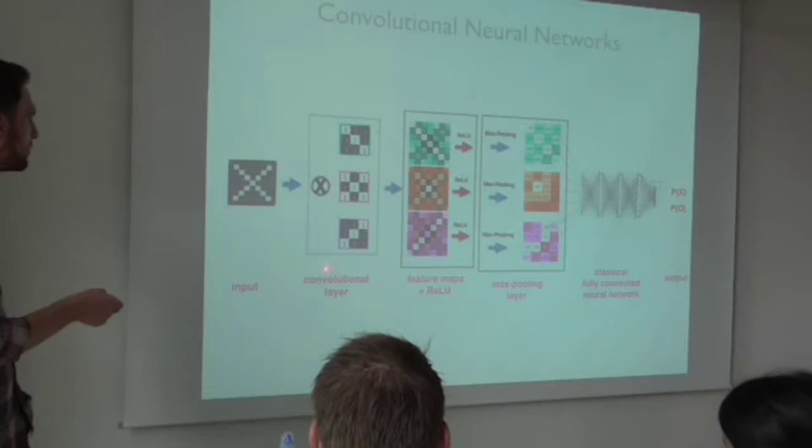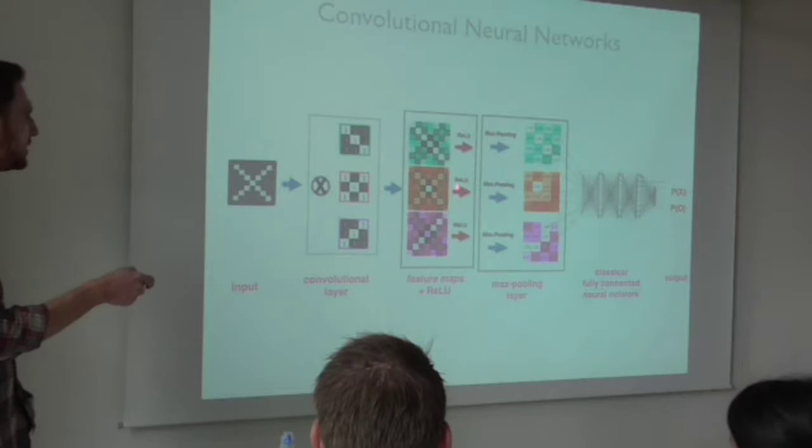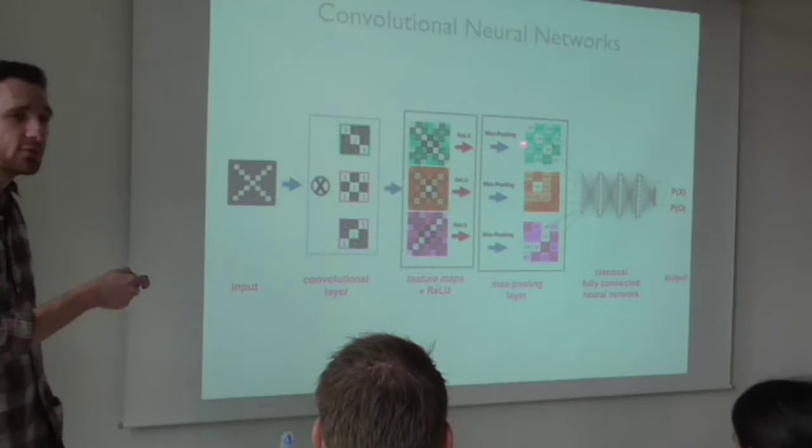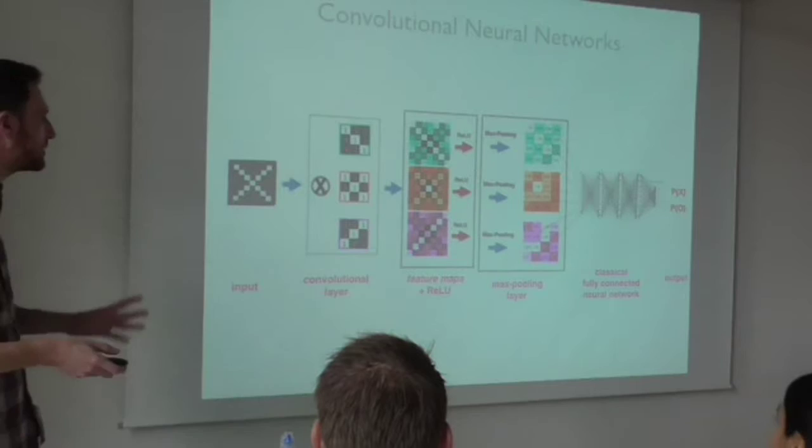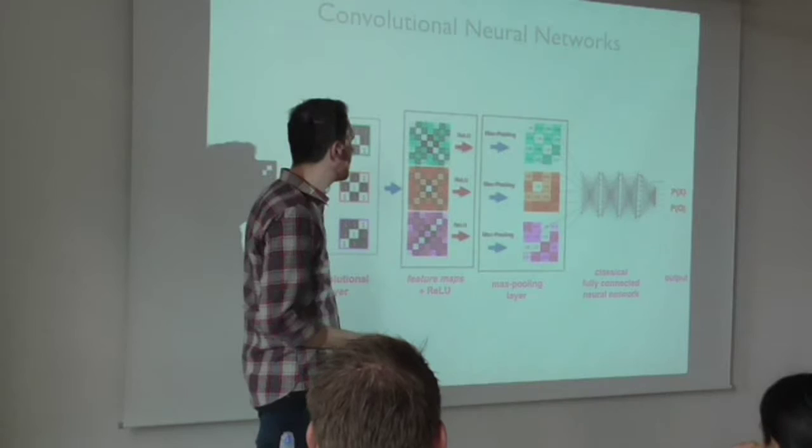So what do we have so far? We have the image, we have a convolutional layer. By applying the convolutions, we get feature maps. We run these feature maps through some activation function — it doesn't have to be ReLU; you could do sigmoid. You can combine these in any way that you want.